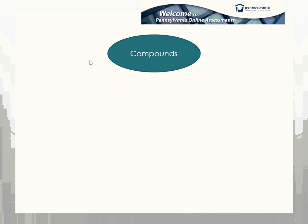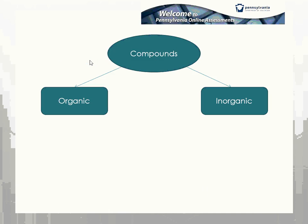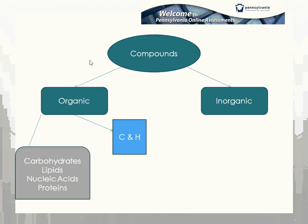We have different compounds in biology, and we're going to break them into two groupings. We have organic compounds and we have inorganic compounds. Organic compounds are those that contain both carbon and hydrogen. We are going to focus mainly on four different categories of organic compounds: carbohydrates, lipids, nucleic acids, and proteins. In addition, we'll discuss one major important inorganic compound for this section.